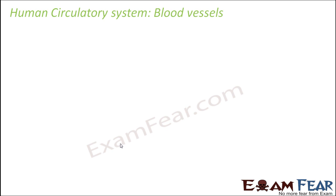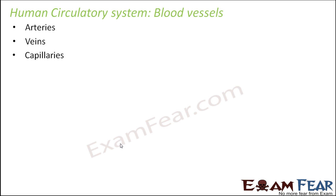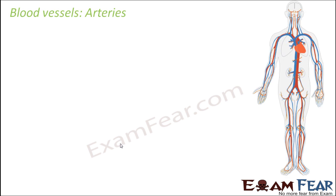Blood vessels are the tube-like structures which actually help to carry blood. There are many different types of blood vessels found in the human circulatory system. Some of the important ones are arteries, veins, and capillaries. We are going to discuss each of them in detail — what each of them carries and how they look.